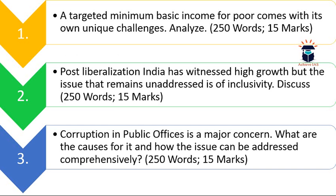The first question is: 'A targeted minimum basic income for the poor comes with its own unique challenges — analyze.' The word limit is 250 and the maximum marks are 15. There is much discussion and debate about minimum basic income for the poor, which is why this question has featured in today's series. You have to analyze this statement within 250 words.